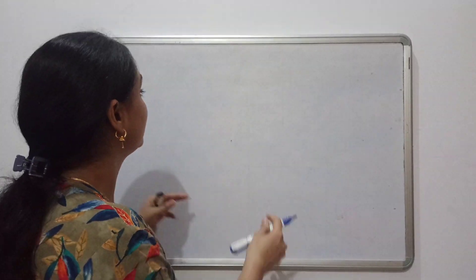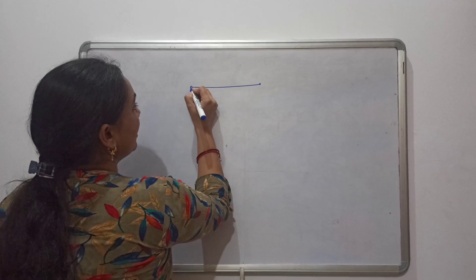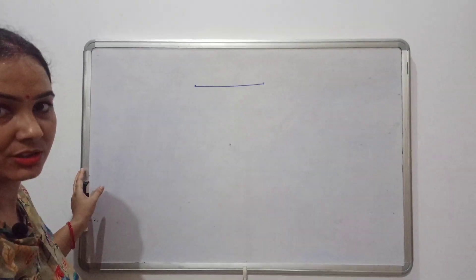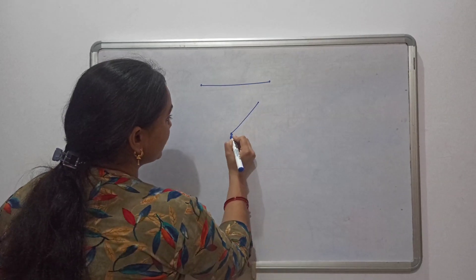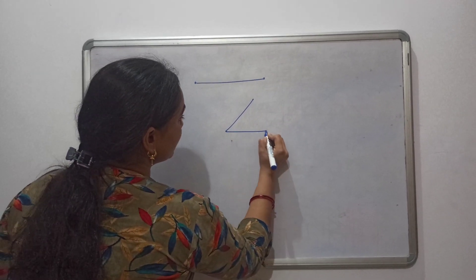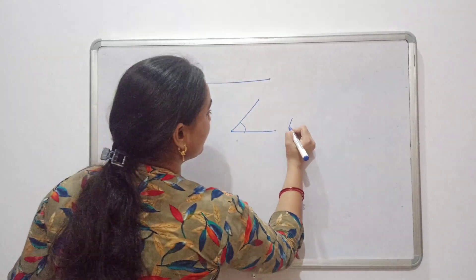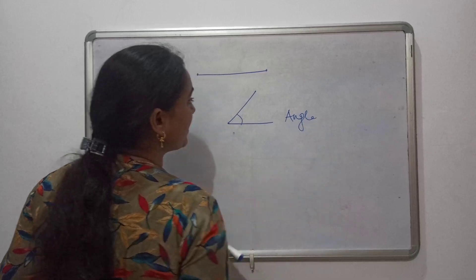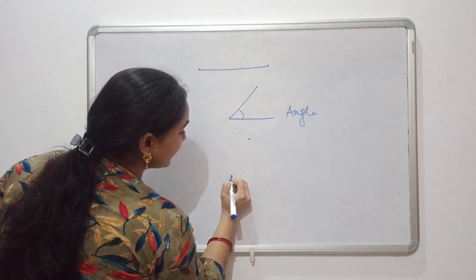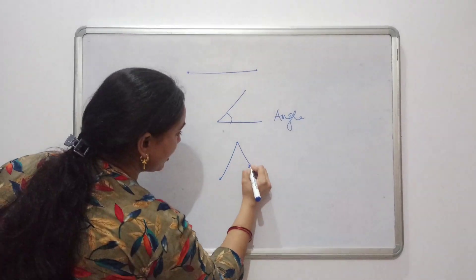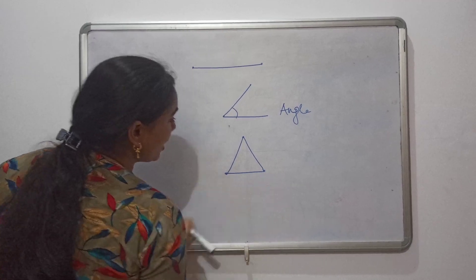Now see, this is a line segment. Now when two line segments meet, they form an angle. Now when three line segments meet, when three line segments join, they form a triangle.